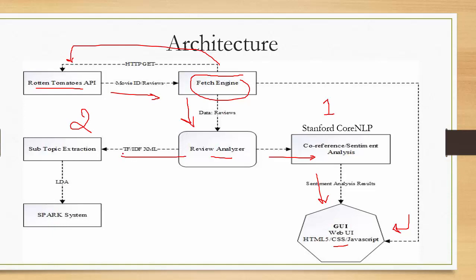For the TF-IDF path, XML format is used to communicate between the review analyzer and the subtopic extraction module, which is then passed to the LDA running on Spark. However, the Spark system is not connected to the GUI because it takes more than 25 seconds to process each review on a single cluster. With approximately 30–40 reviews per movie, the total processing time is too long, so we are restricting the Spark/LDA output to the console while displaying the co-reference output in the GUI.